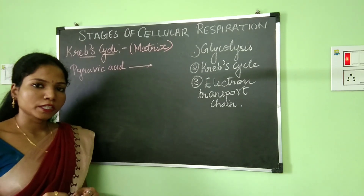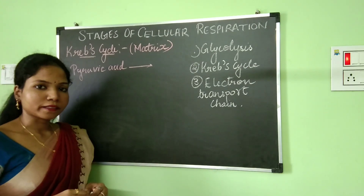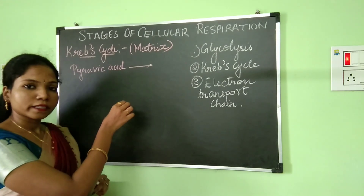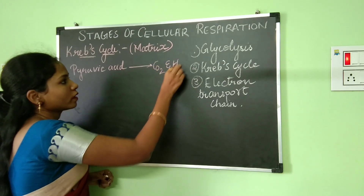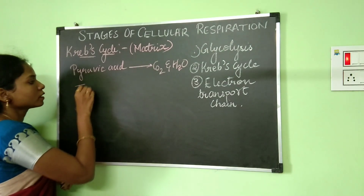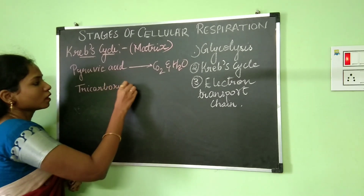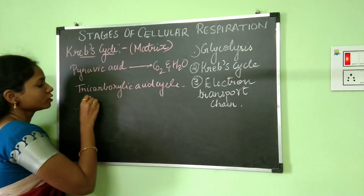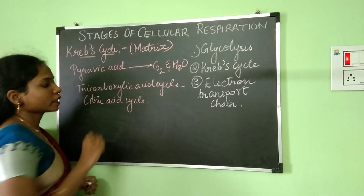What is the meaning of oxidation? Oxidation means oxygen molecules are going to add up to the pyruvic acid. So during the process of Krebs cycle, the pyruvic acid is going to be oxidized to release carbon dioxide and water. Krebs cycle is also called the tricarboxylic acid cycle, or it is also called the citric acid cycle.